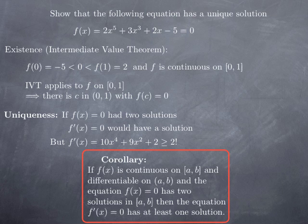But if you look at f'(x) for this particular function: differentiating 2x⁵ gives 10x⁴, and 3x³ gives 9x², so f'(x) = 10x⁴ + 9x² + 2. This is at least 2 because x² and x⁴ are always non-negative — it's 2 plus two positive terms, so it is always at least 2. In particular, f' does not take the value 0. What we see is that if f(x) = 0 had two solutions, then f' would take the value 0, but it does not. Therefore f(x) = 0 cannot have two solutions, and we conclude that there is a unique solution.